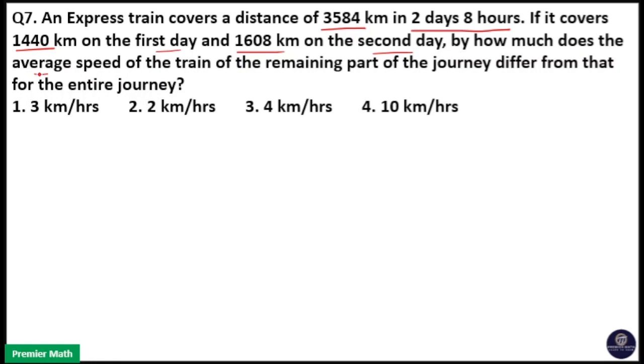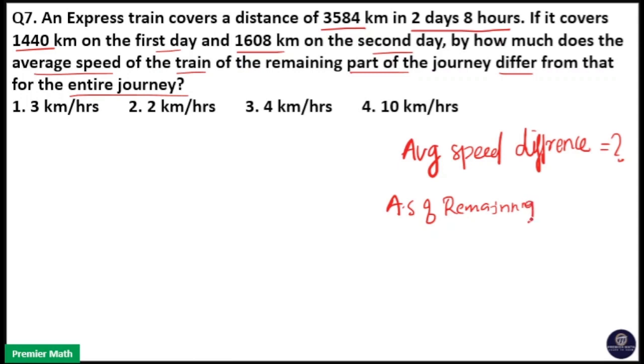by how much does the average speed of the train of the remaining part of the journey differ from that for the entire journey? So we have to find out the average speed difference. This means average speed difference for the entire part of the journey and the remaining part of the journey. Here average speed difference means average speed of the remaining part of the journey minus average speed of the entire journey.